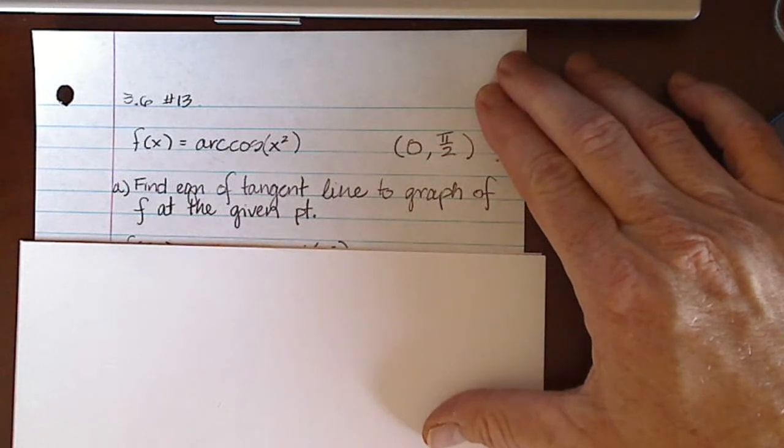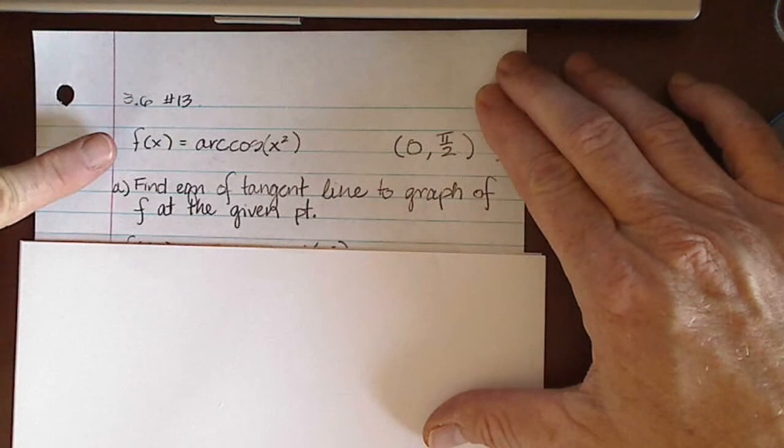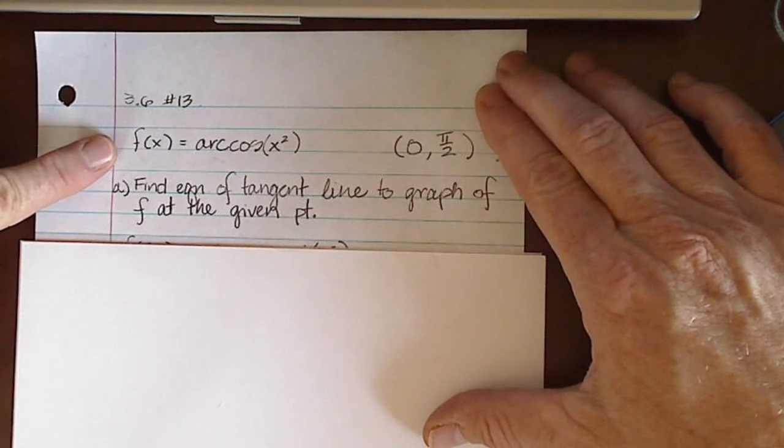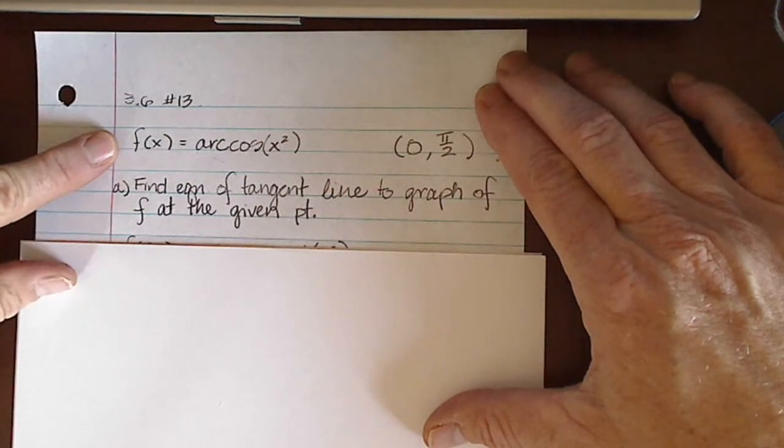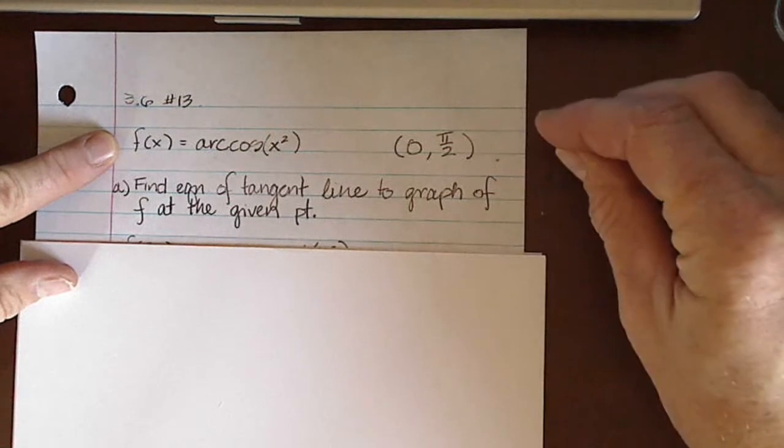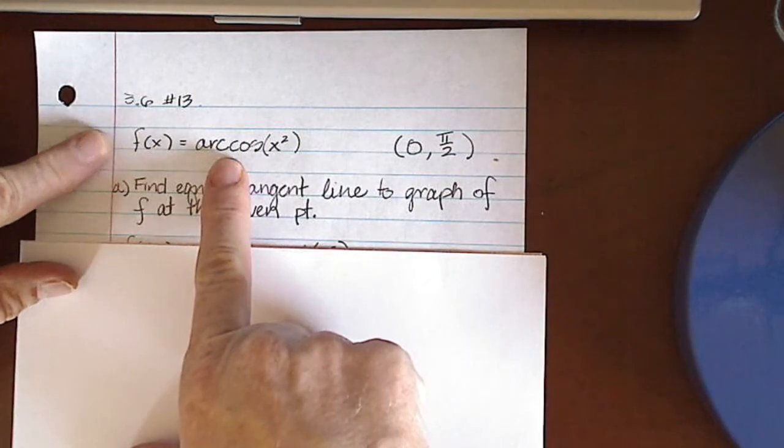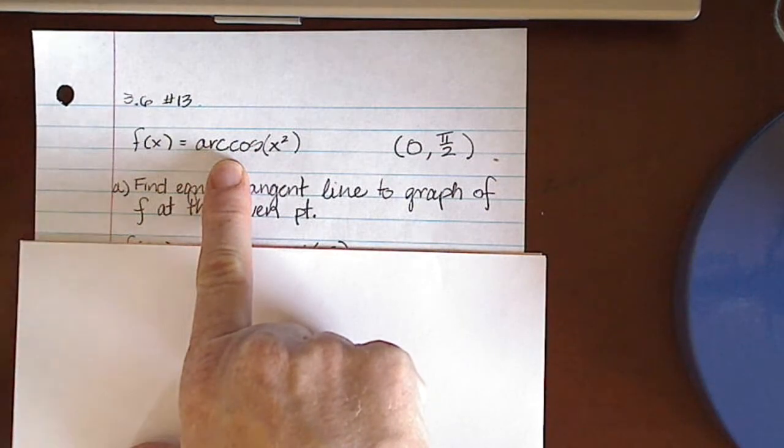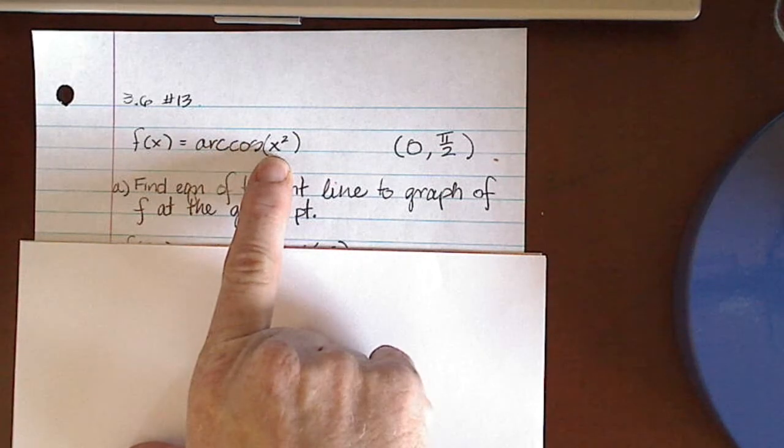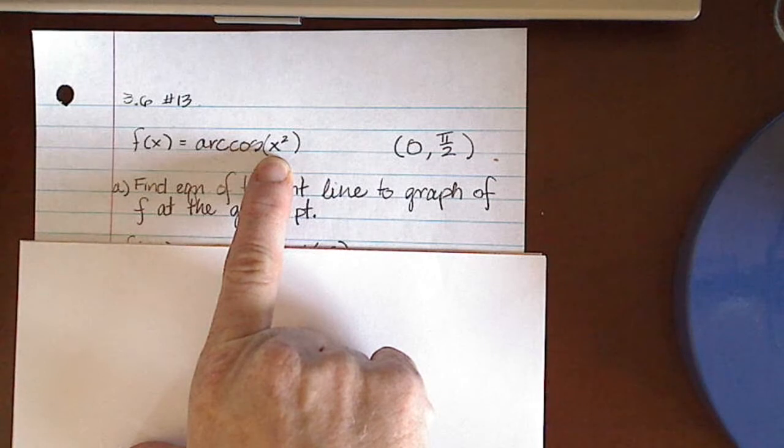So I have to take the derivative of this given function, and we see that to take this derivative, I'm going to need the chain rule, because I have an outer function of arc cosine, one of those inverse trig functions, and an inner function of x squared.